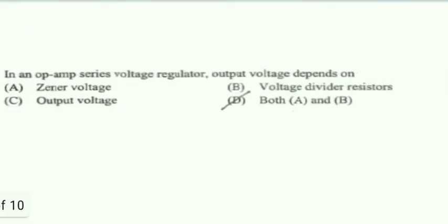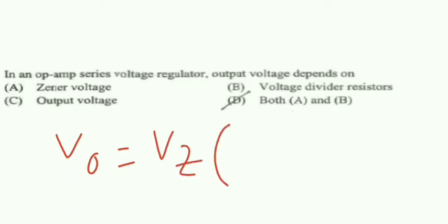The first question is: in an op-amp series voltage regulator, the output voltage depends on what? We know that in op-amp series voltage regulator, output voltage Vo is given by Vz into r1 divided by r2 plus 1. So this is the output voltage of op-amp series voltage regulator.